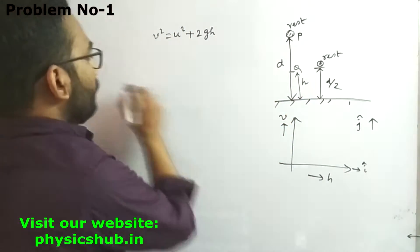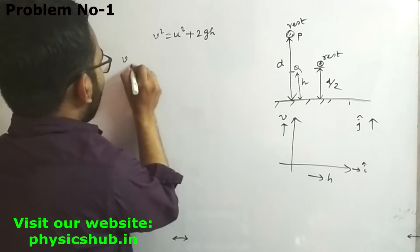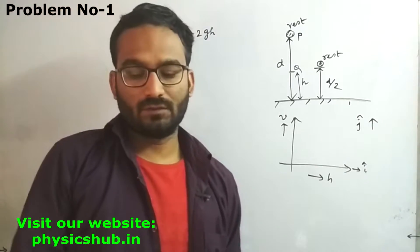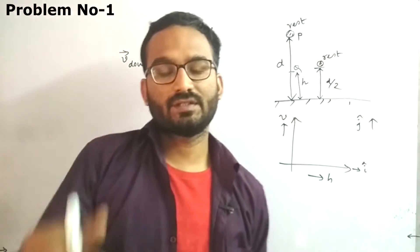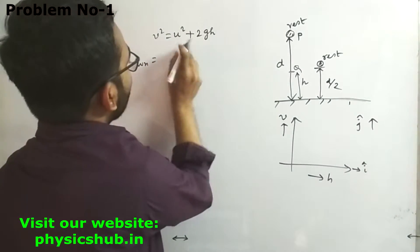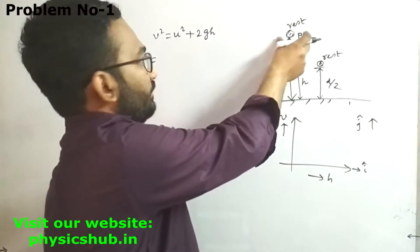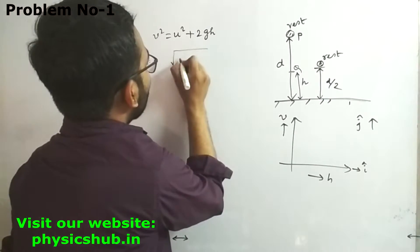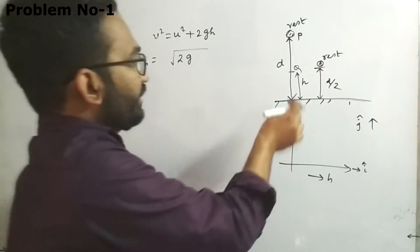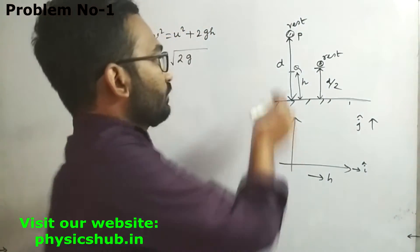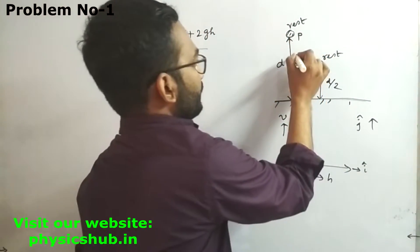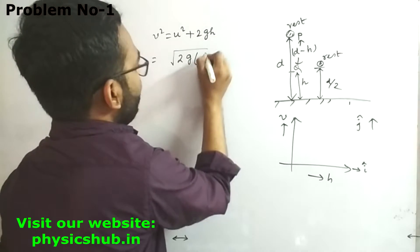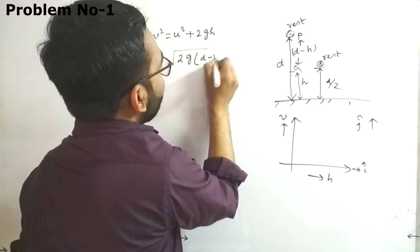At this point, the velocity is v_down. We're giving a vector sign because the ball is moving downwards. During its downward journey, u = 0 since it starts from rest. This equals √(2gh). If the total distance is d and the ball is at height h, then the distance traveled is d - h. So v_down = √(2g(d-h)).